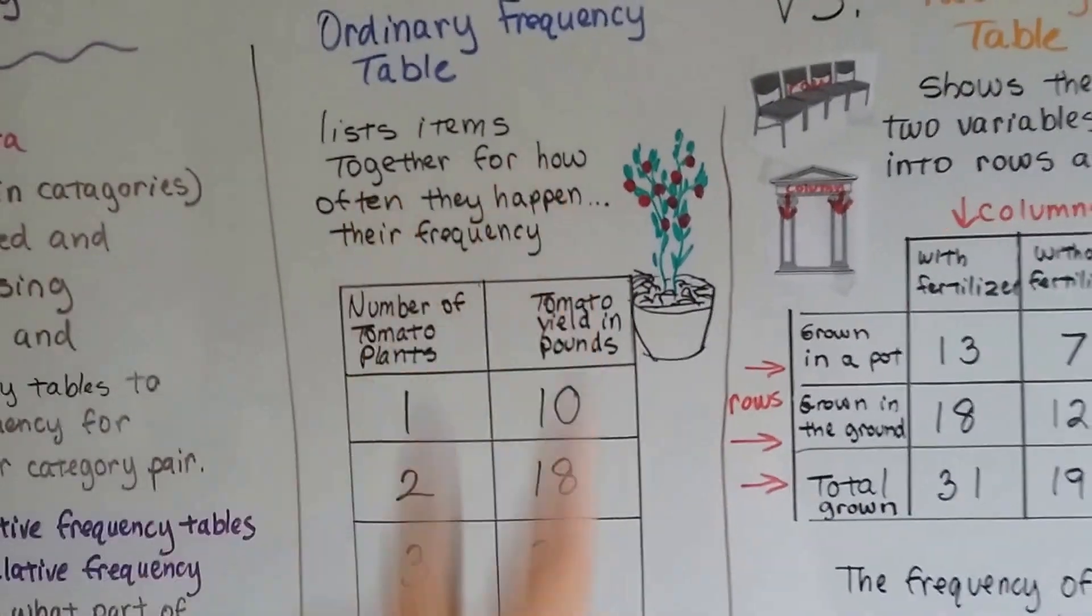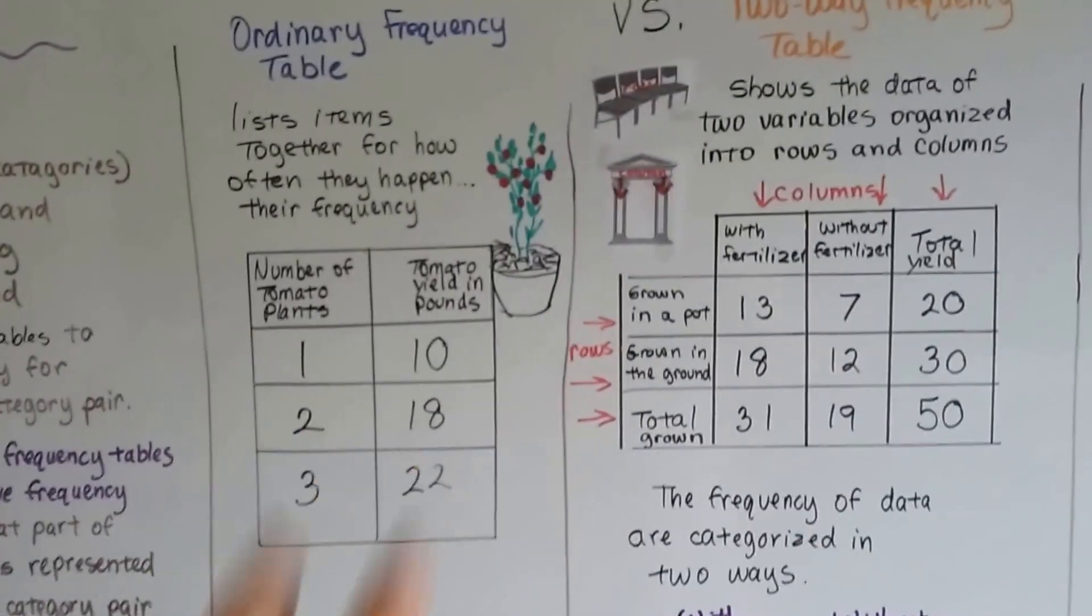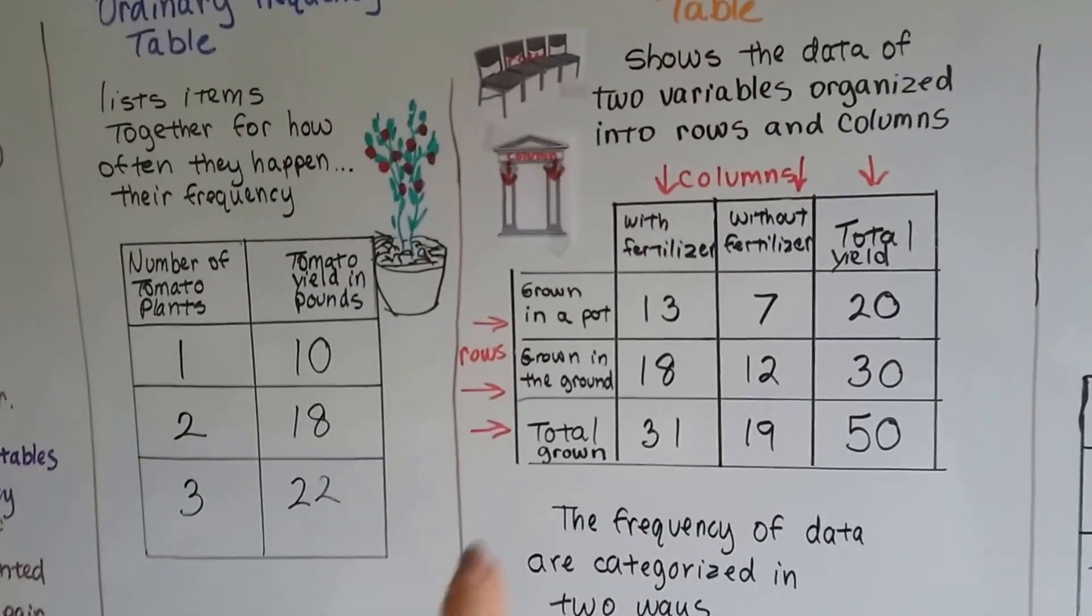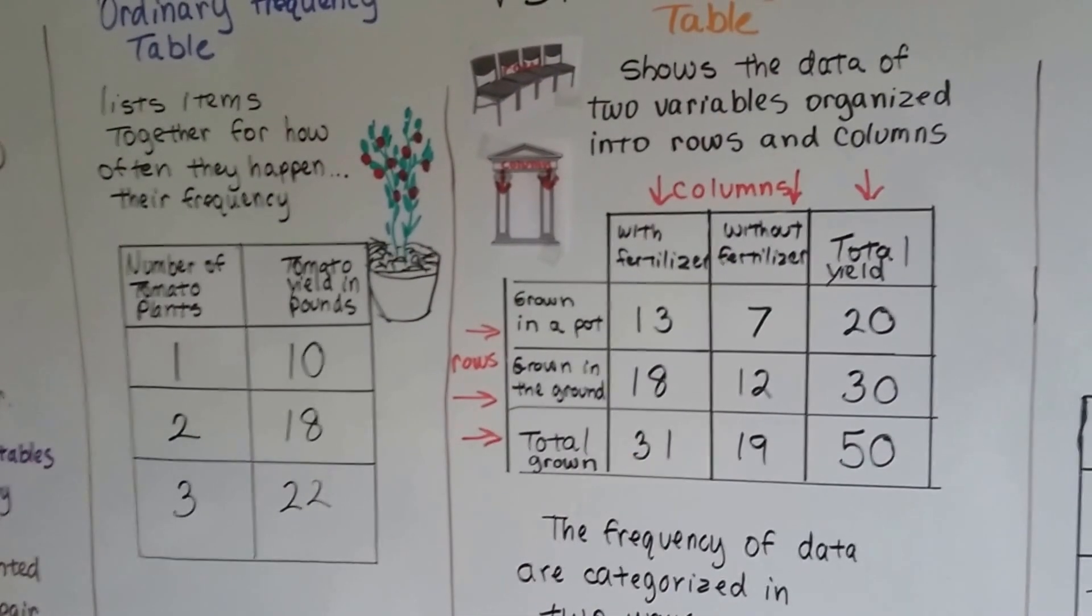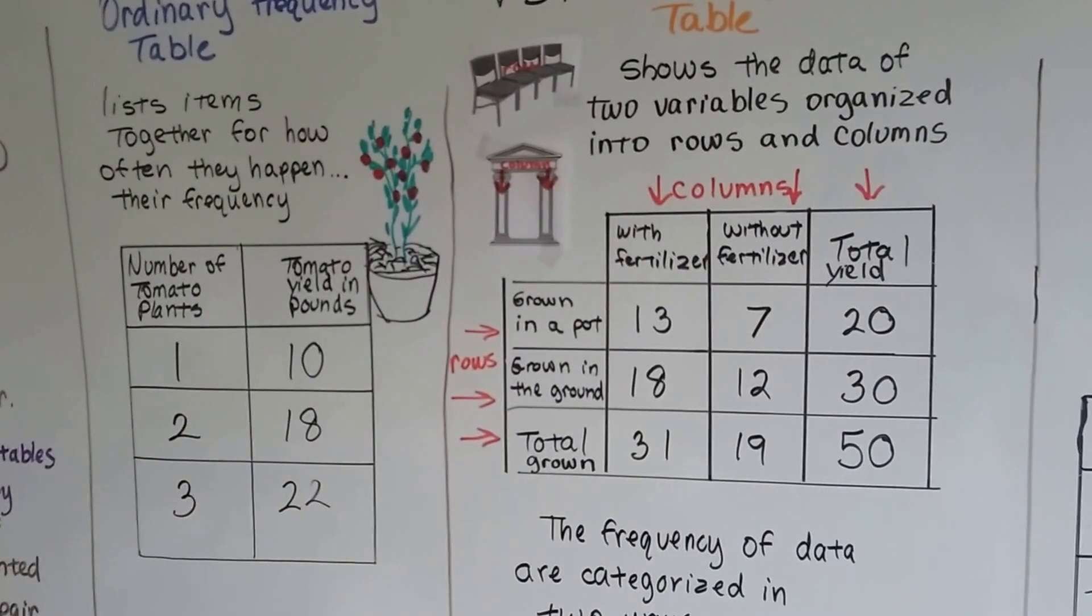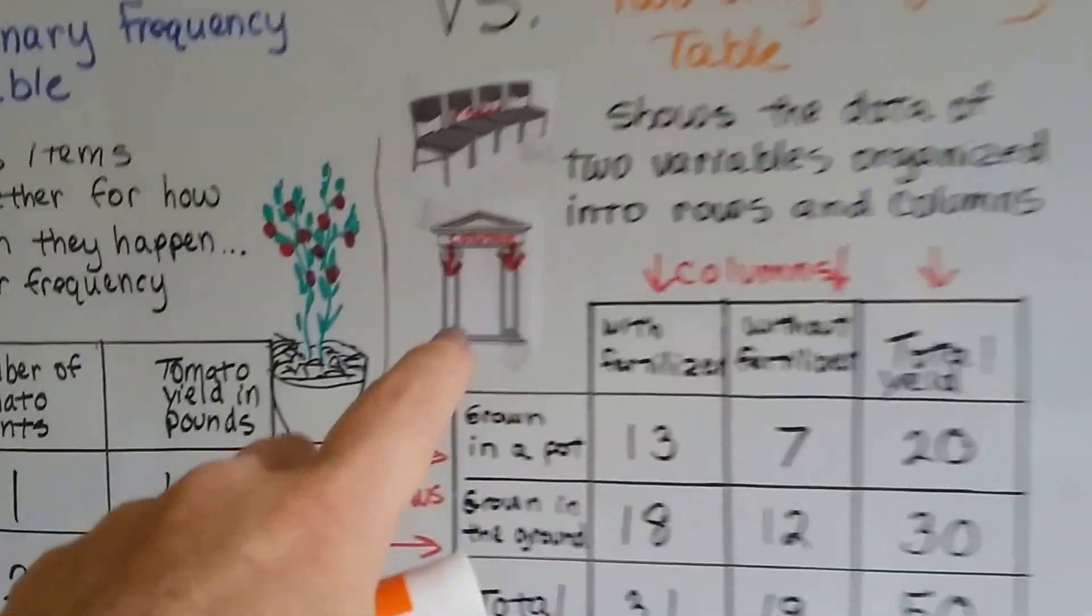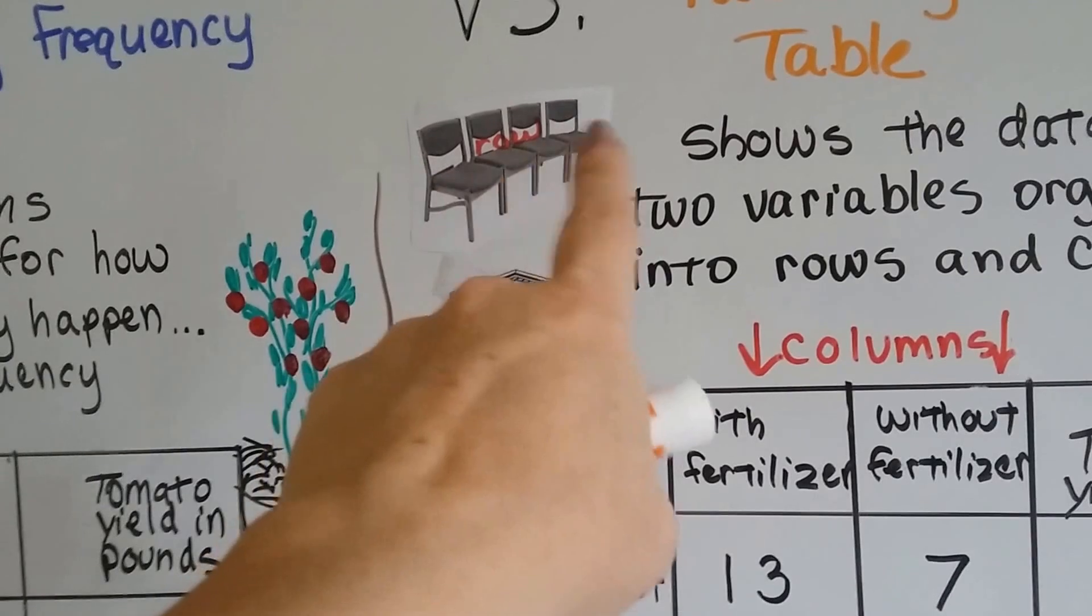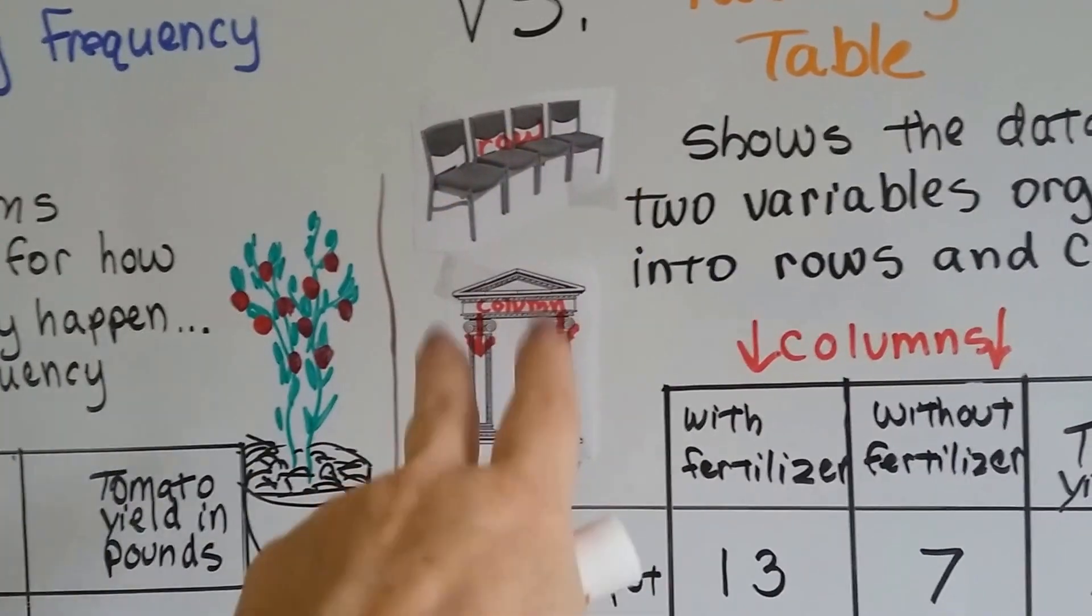So that's just a frequency table. It tells us how often he got tomatoes. Now, in a two-way frequency table, it's going to show the data of two variables organized into rows and columns. So remember, columns are like the architectural columns that hold up a building. And rows are like a row of seats. So these are going vertical.